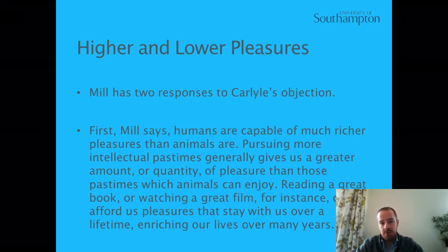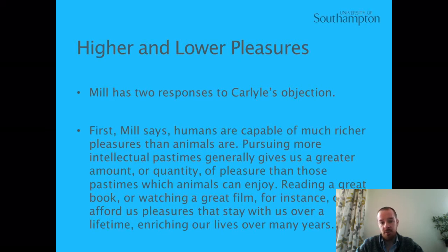Now Mill has two responses to Carlyle's objection. First, Mill says humans are capable of much richer pleasures than animals are. Pursuing more intellectual pastimes generally gives us a greater amount or quantity of pleasure than those pastimes that animals can enjoy. Reading a great book or watching a great film, for instance, can afford us pleasures that stay with us over a lifetime, enriching our lives over many years.